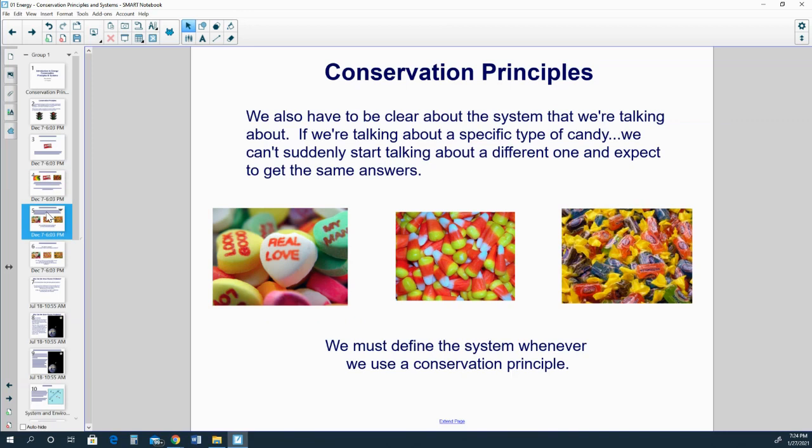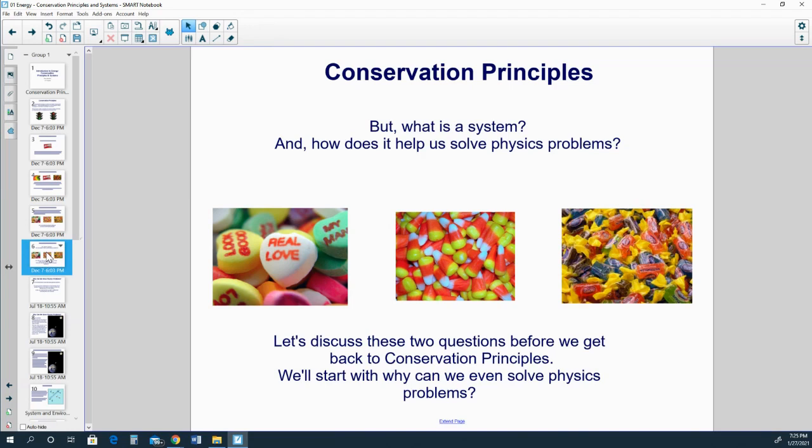We also have to be clear about the system that we're talking about. If we're talking about a specific type of candy, we can't suddenly start talking about a different one and expect to get the same answers. So you have to define the system whenever we use a conservation principle. But what exactly is a system and how does it help us solve physics problems? Let's discuss these two questions before we get back to conservation principles.